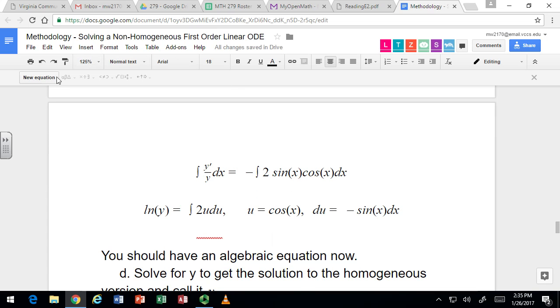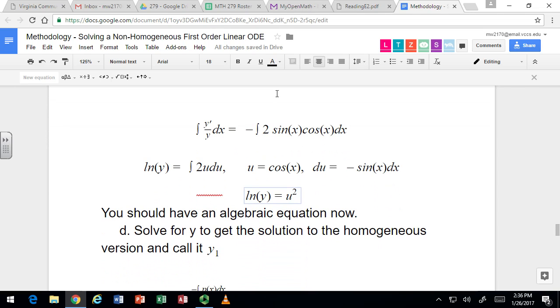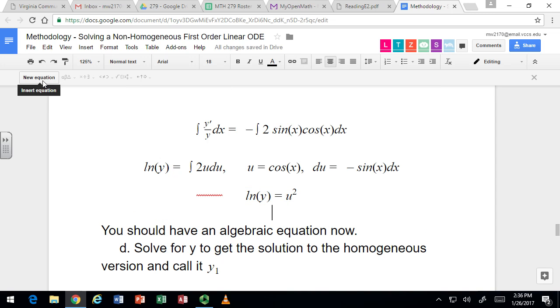Now let's integrate that. Integral of 2u is u squared. And remember, we are taking the constant to be 0 when we find this y1, the solution to the homogeneous one, because we can use any particular solution to the homogeneous differential equation. So we're going to use the simplest one, which has a constant of 0. So that's why there's no plus c.